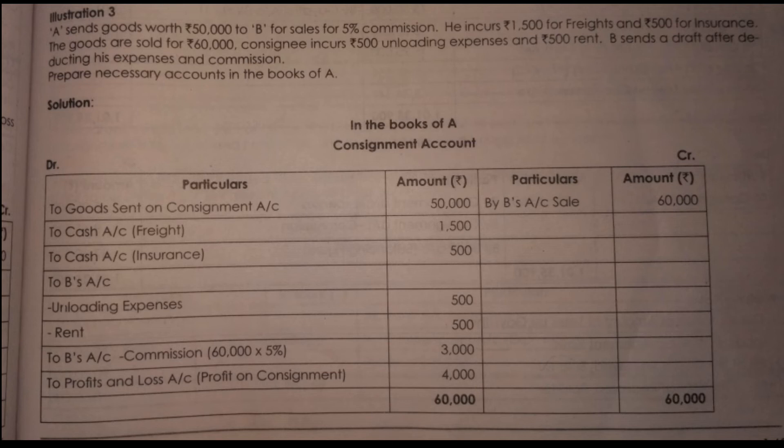What commission is mentioned? This is an ordinary commission. The consignor incurs 1,500 for freight and 500 for insurance. And the goods are sold at 60,000.